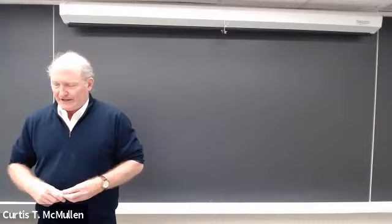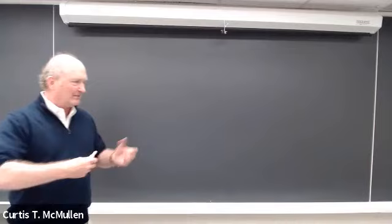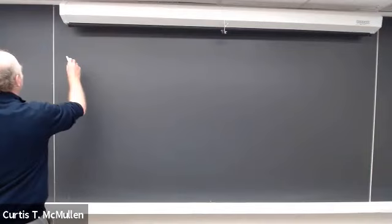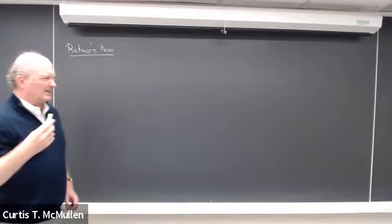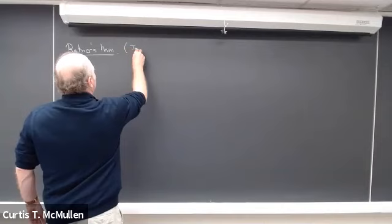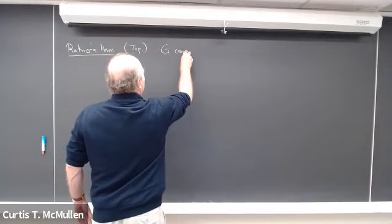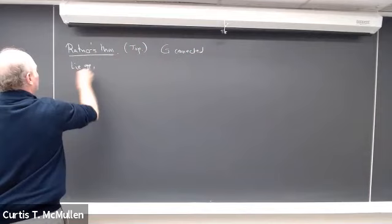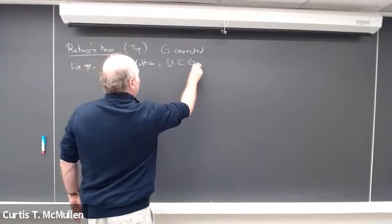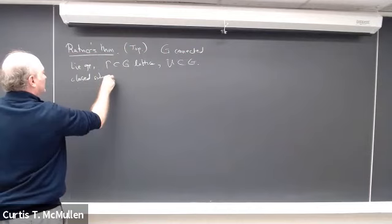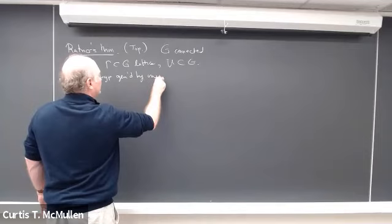Welcome back everyone. This week I want to discuss Ratner's theorem and the Oppenheim conjecture, and I'll try to flesh out the contents so you see how they fit in with the ideas we've discussed so far. Let me start by recalling Ratner's theorem — I'll just state the topological version; there's also a version for ergodic measures. The setting is G is a connected group, gamma is a lattice, and U contained in G is a closed subgroup generated by unipotent elements.